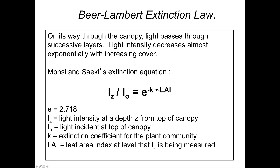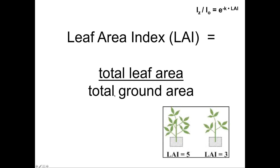The other parameter is LAI — the leaf area index at the level where light intensity is being measured. LAI is quantified as the total leaf area as a function of the total ground area. You take a fixed ground area, say one meter squared, then quantify how much leaf area is above that area — for example, by harvesting all the biomass above it and measuring its leaf area. That leaf area divided by the ground area gives you the leaf area index.